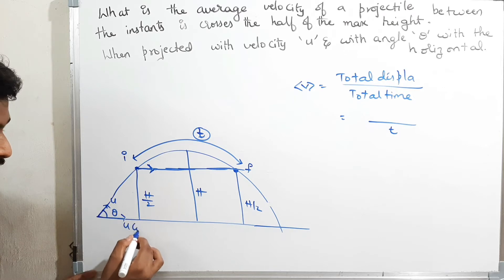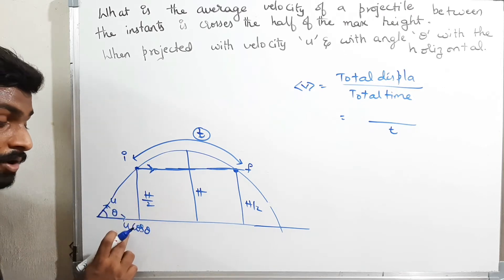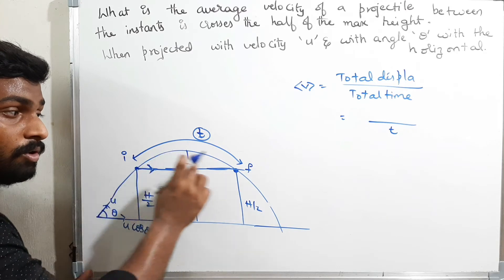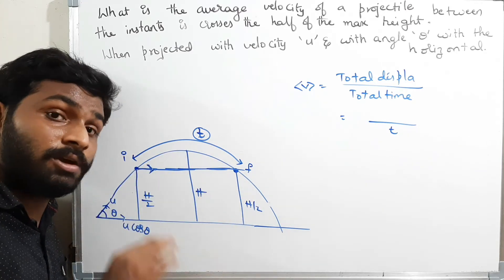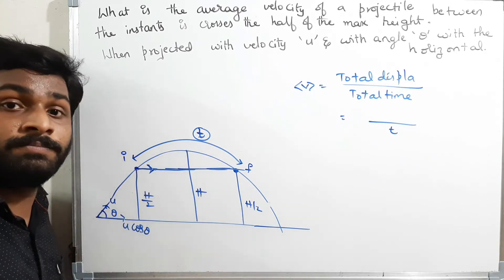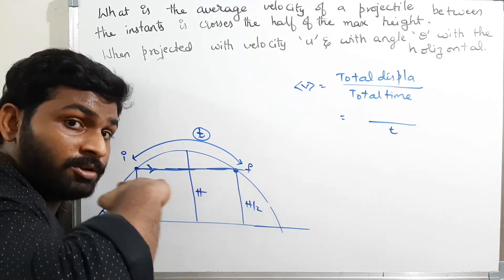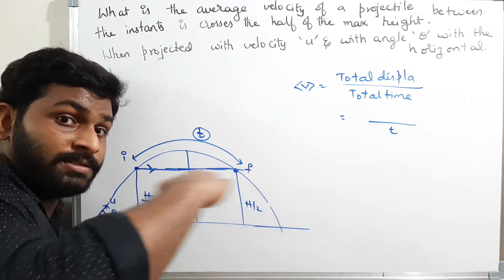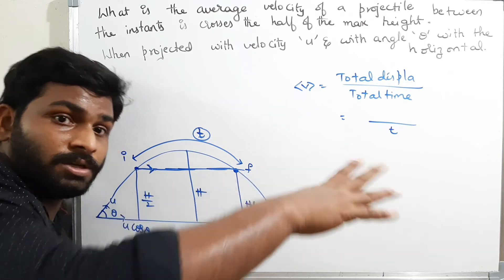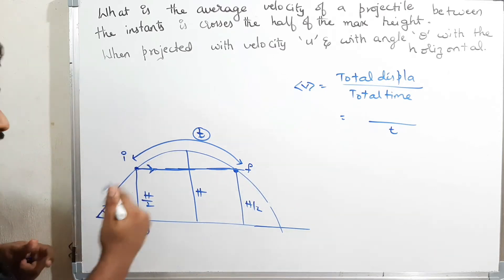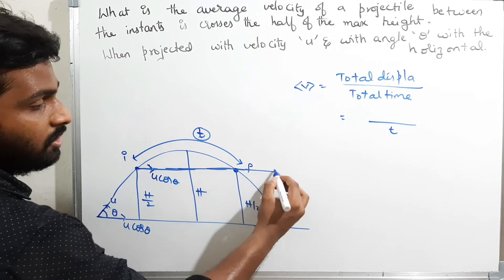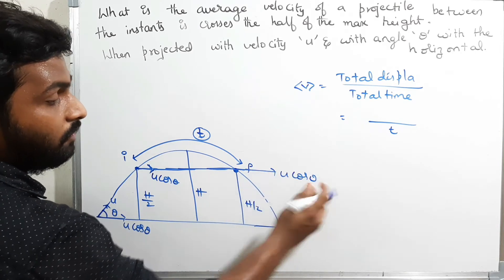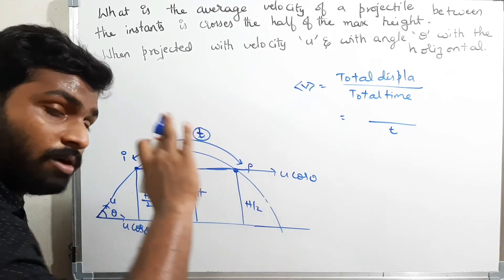What is the horizontal velocity? The horizontal velocity is u cos θ. Wherever the body is, the horizontal velocity won't change. Why? Because there is no acceleration along the horizontal direction. If there is no acceleration, the velocity will be constant. So the horizontal velocity is u cos θ everywhere — at the start, at the top, and at every point along the trajectory.